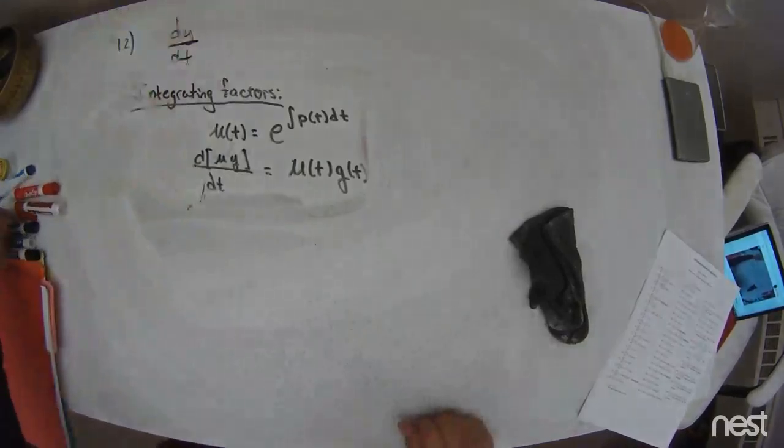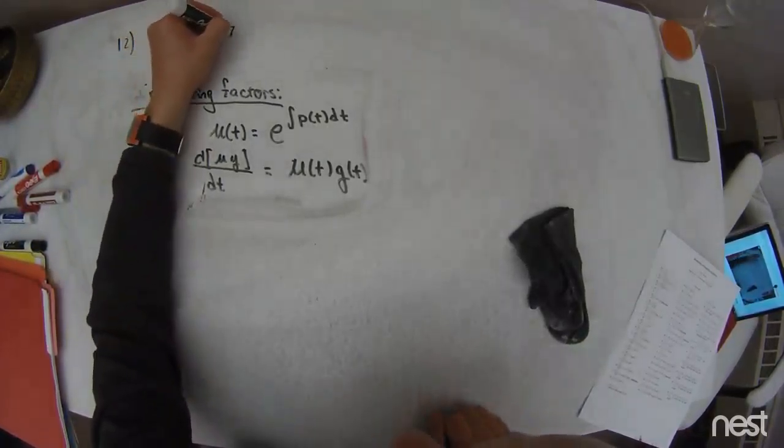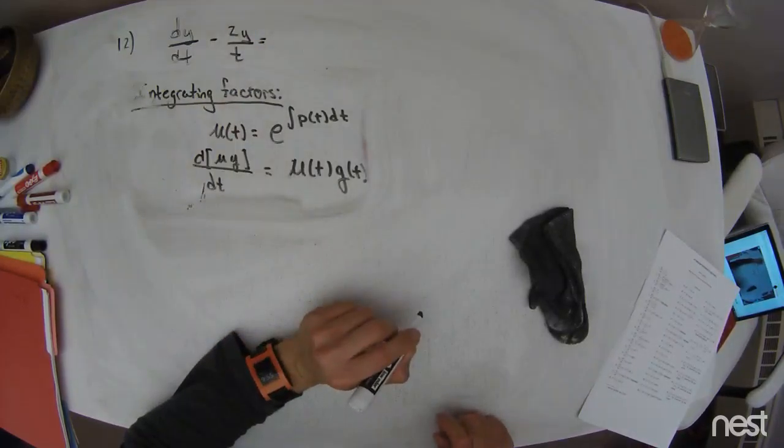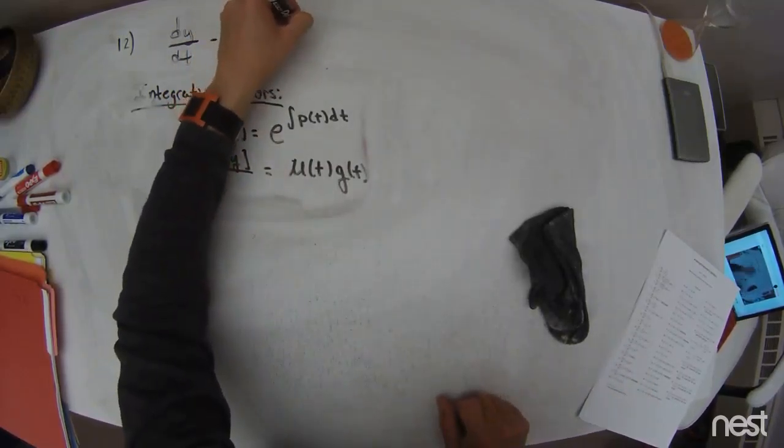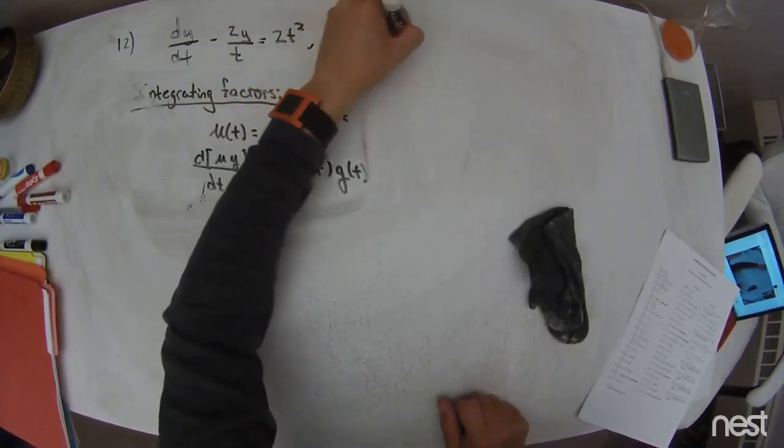So we get dy/dt minus 2y over t is equal to 2t squared. Then I have the initial condition y of negative 2 is equal to 4.